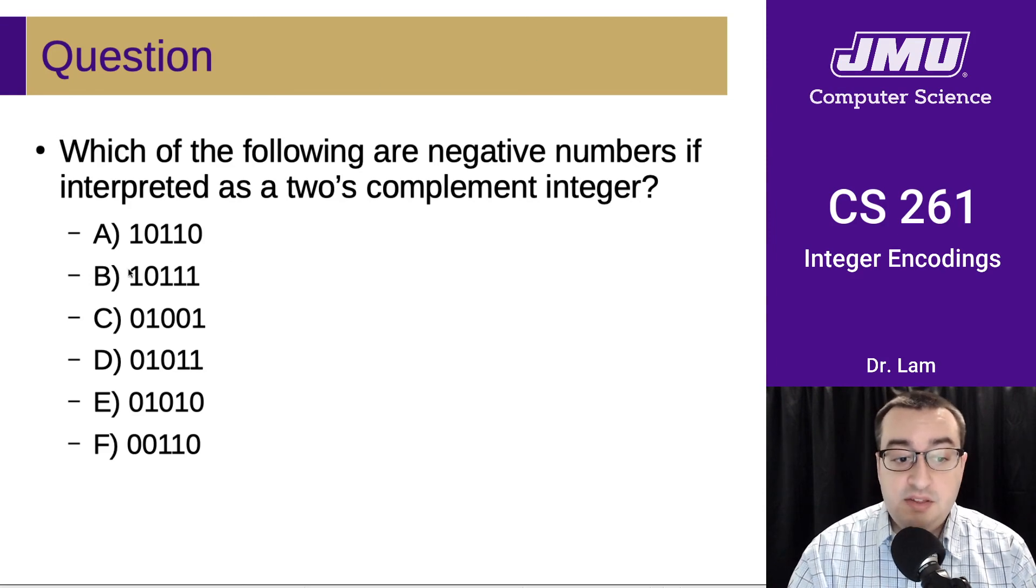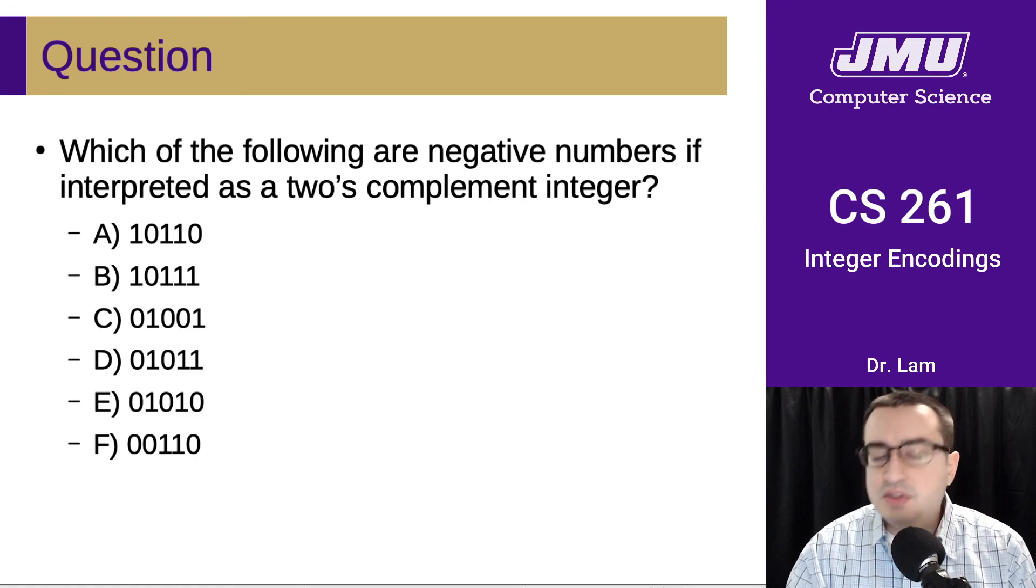And so regardless of which of these three you're using, if the first bit is set, which it is in these two numbers, then it's going to be a negative number. The absolute value of that negative number is going to be different depending on which encoding you're using. But the fact that it's a negative number is the same across all of the encodings, which is kind of nice.